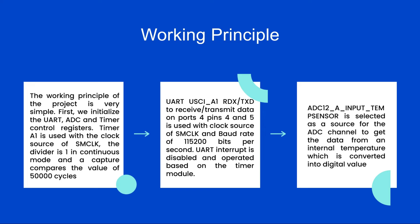The working principle is straightforward. First we initialize the UART, ADC and timer control registers. Timer A1 is used with the SM clock source. The ADC is in continuous mode cycling at 50,000 cycles. The UART USCI A1 interrupt service routine handles receive and transmit buffers using port 4 pins 4 and 5, with a baud rate of 115,200 bits per second. ADC 12A with the internal temperature sensor on channel 10 converts the analog temperature to a digital value.